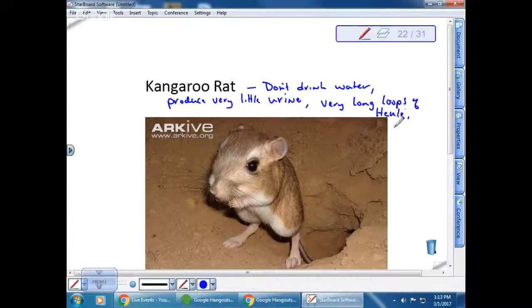The thing about these guys is that they have very long loops of Henle, and this means that they can produce super concentrated urine. Because they don't drink water, they get all of their water from the metabolism of their food. When they break down carbohydrates and proteins, water is produced during that breaking down. It's amazing that they can get almost all the water they need from the seeds and nuts that they would naturally eat.